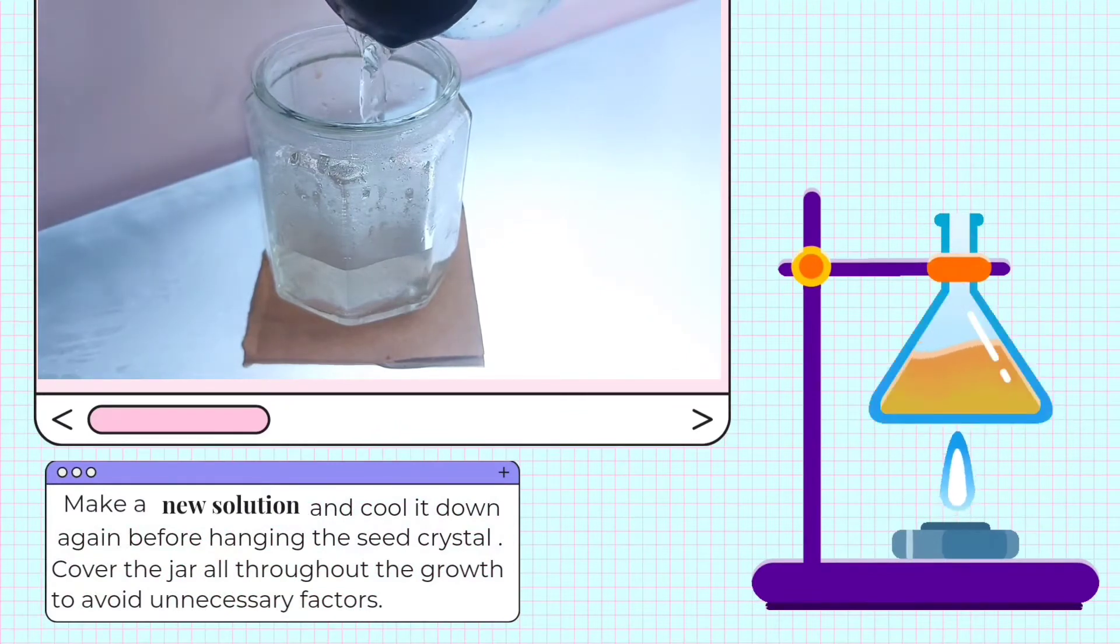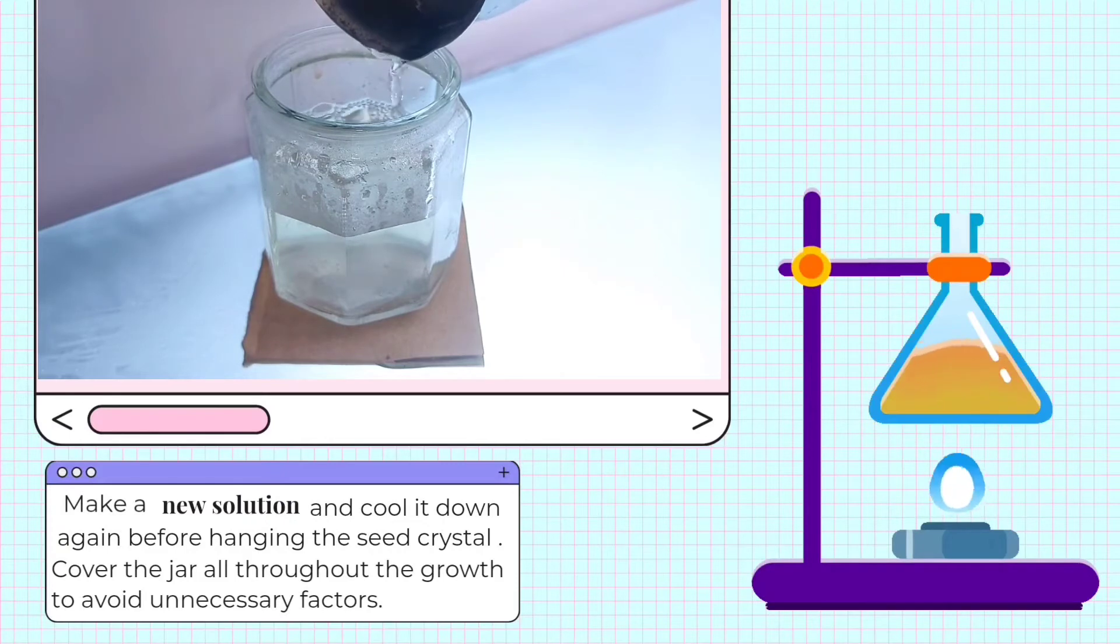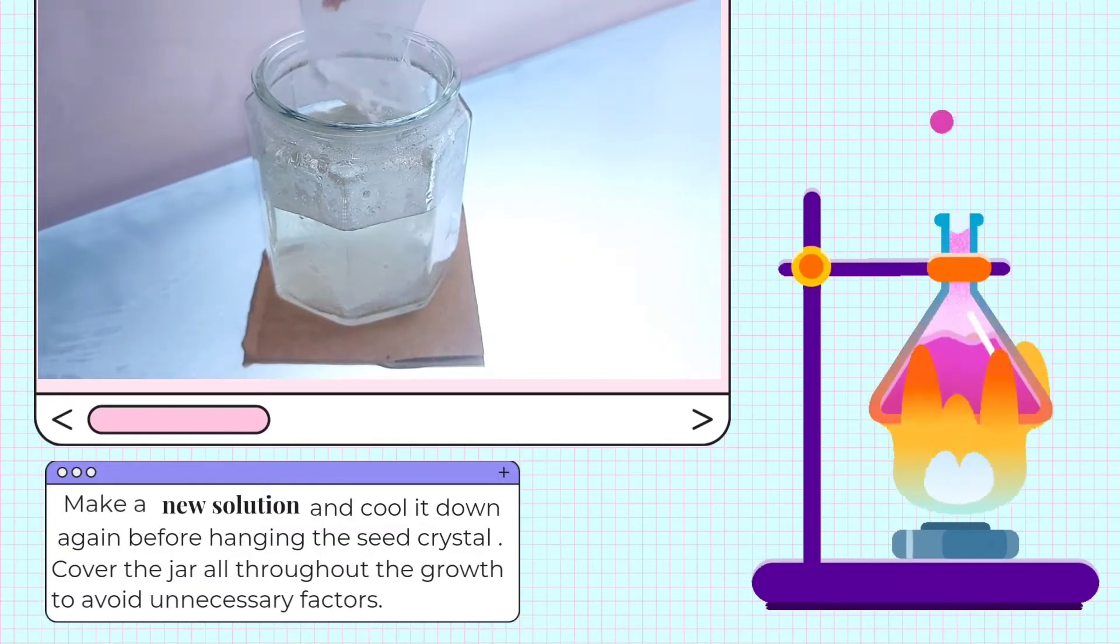Suspend the crystal in a freshly prepared solution of alum and water. Just like the first procedure, the solution should be saturated at a high temperature. So when it cools down, it will become supersaturated.